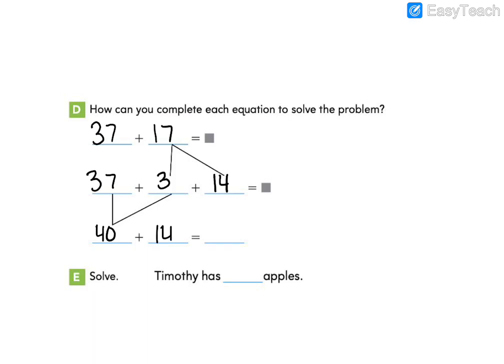Well, we can use our understanding of place value to know that 14 is 10 and 4. One 10 more than 40 is 50. Plus 4 more is 54. So we know in total, Timothy has 54 apples.